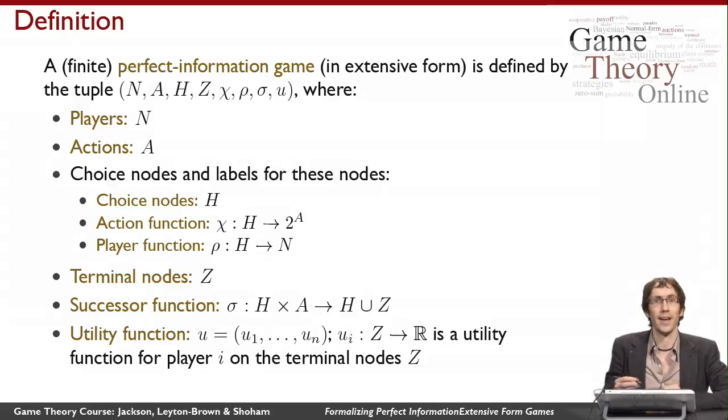Now we can talk about what the players' utilities are in the game. We're going to have a utility function for every player that assigns a number to every terminal node. For each player, for each terminal node, we associate a real value which tells us how happy that player is if they end up in that terminal node.